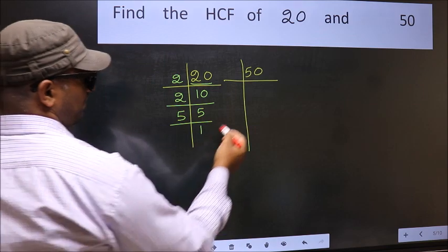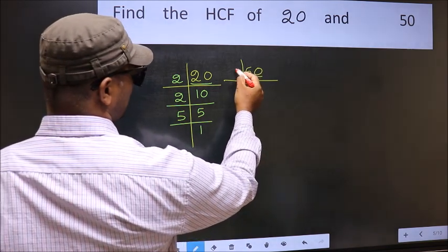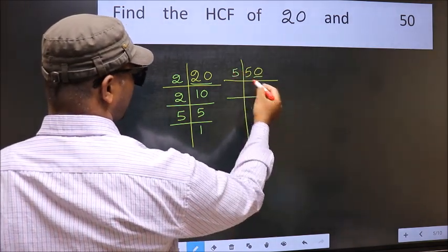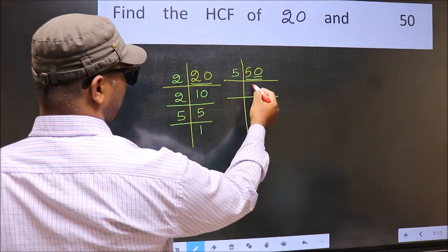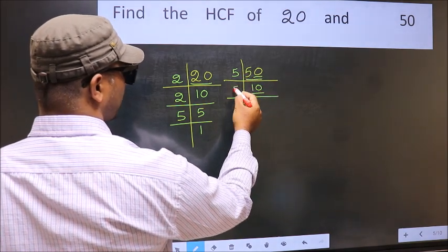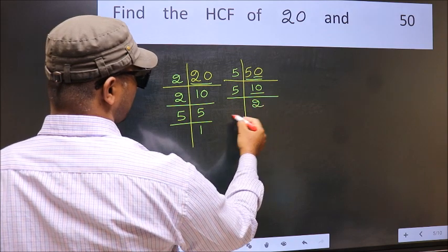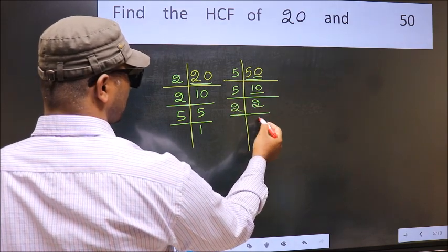Now the other number. Last digit is 0, so take 5. When do we get 50 in the 5 table? 5 tens is 50. Now 10 is 5 twos. 2 is a prime number, so 2 once.